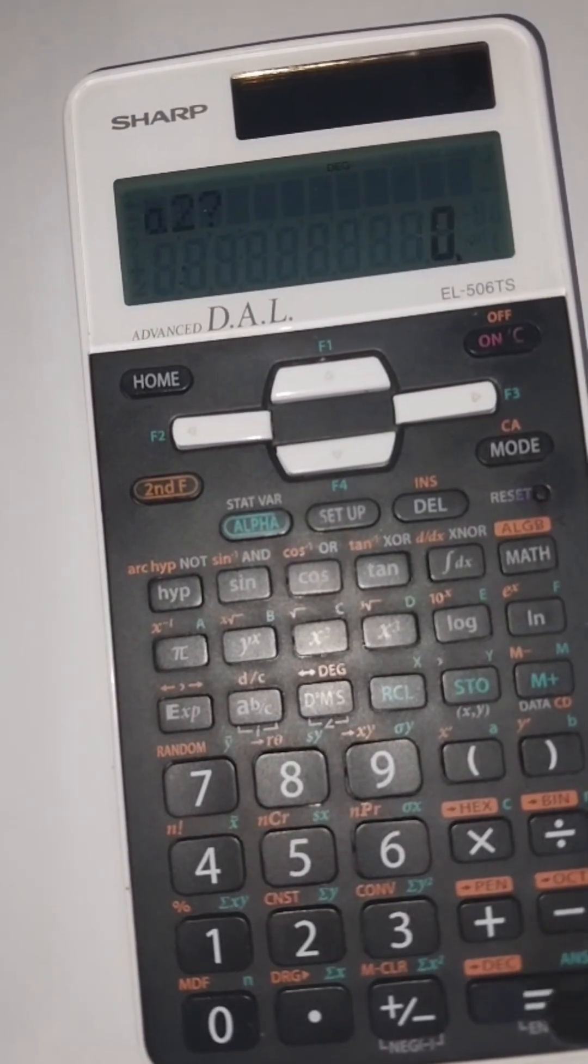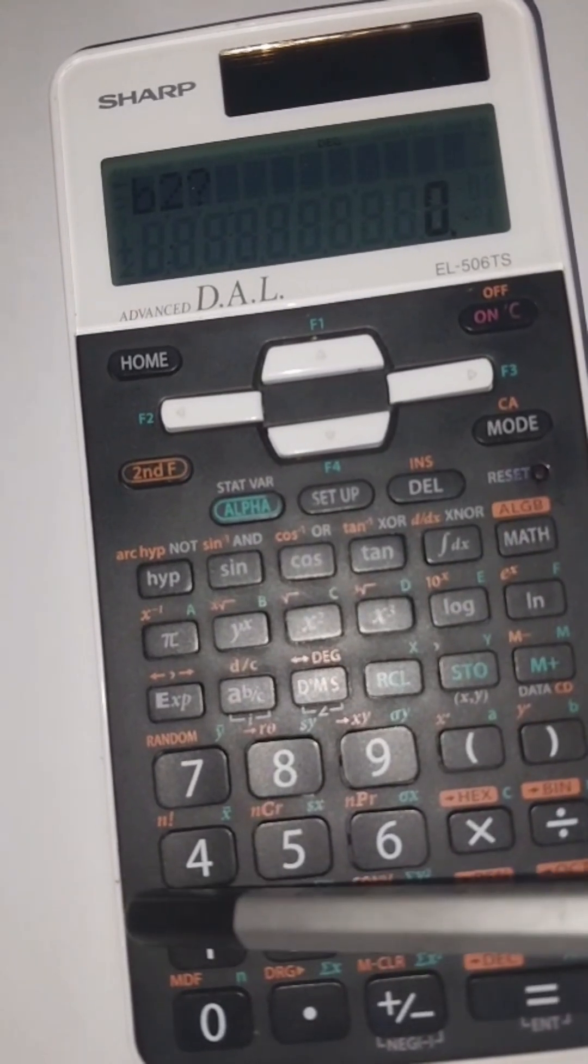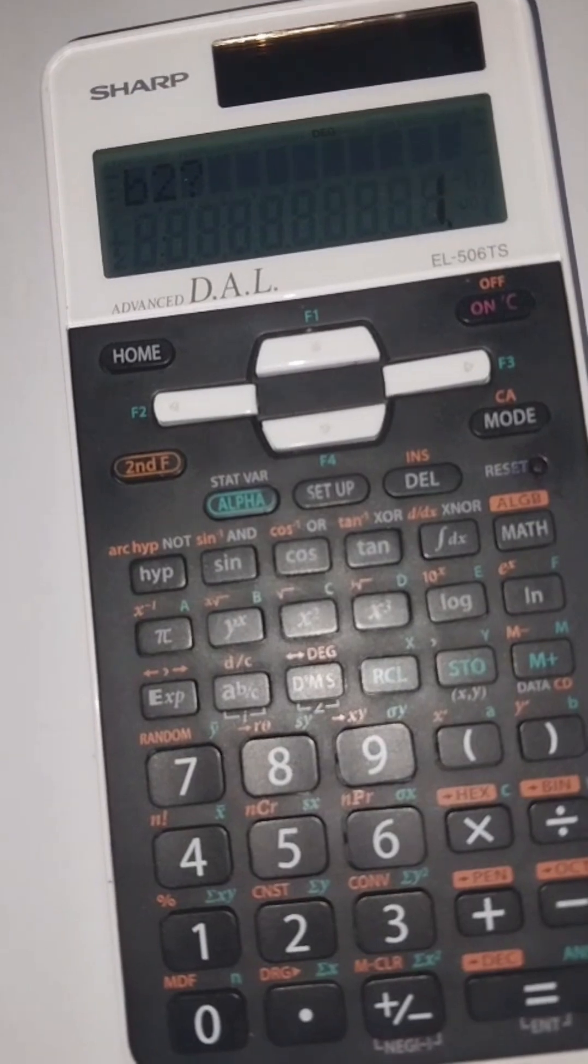A2 is the coefficient of x from equation 2, which is 2. Then you press the equals button. In B2, the coefficient of y from equation 2 which is 1, and C2, the constant of equation 2.